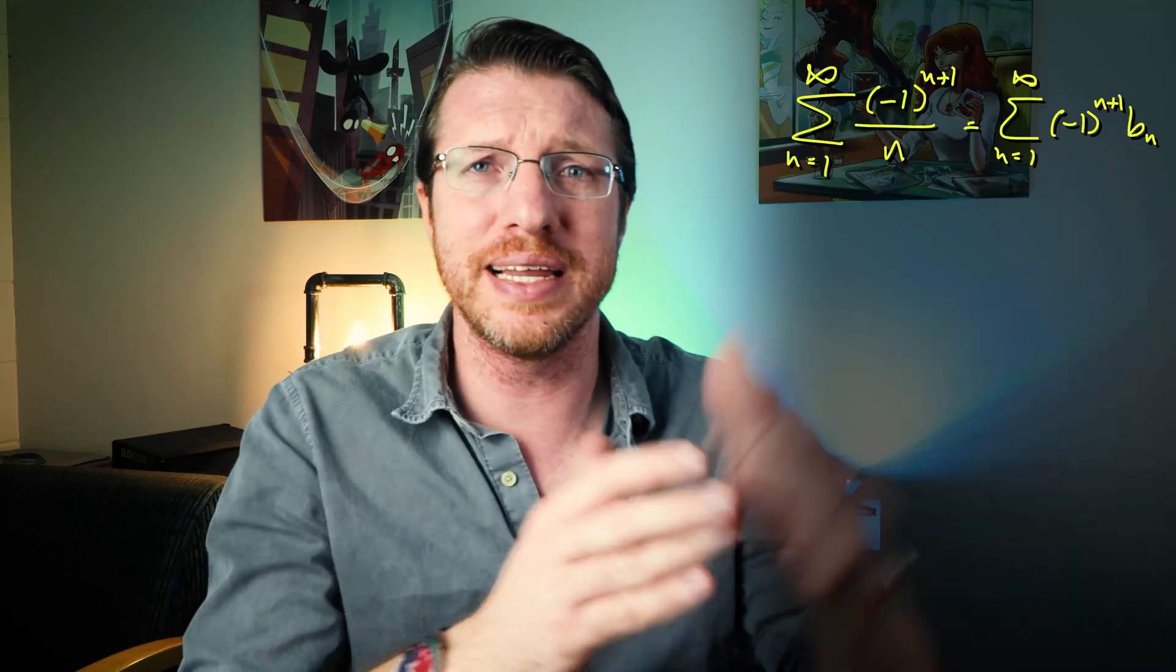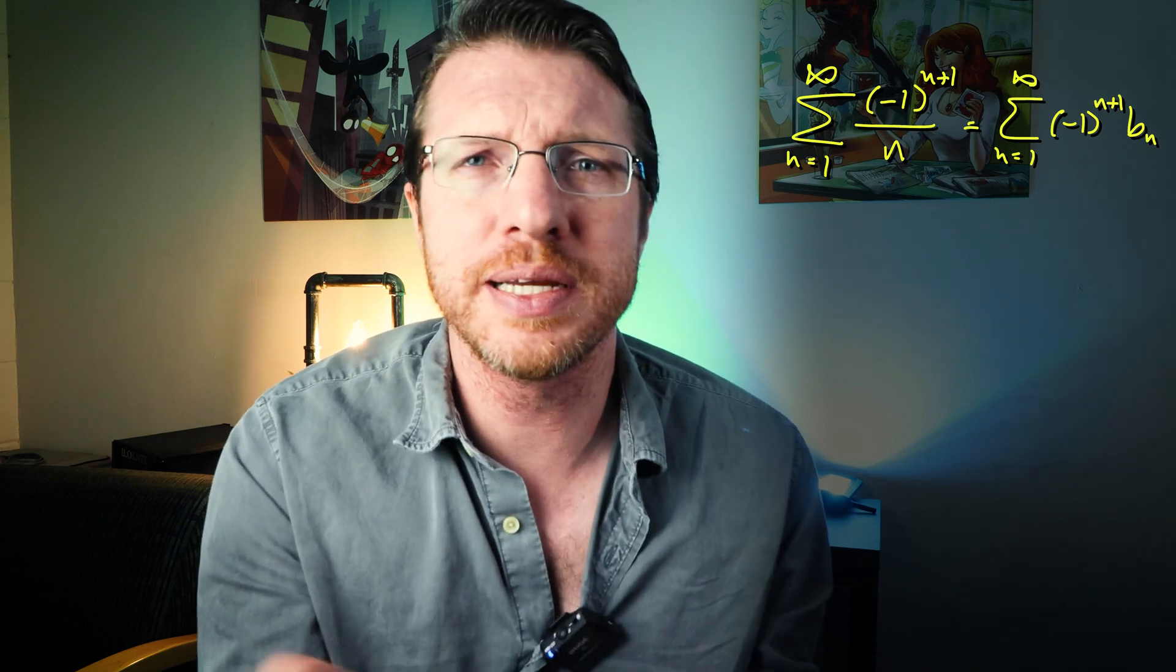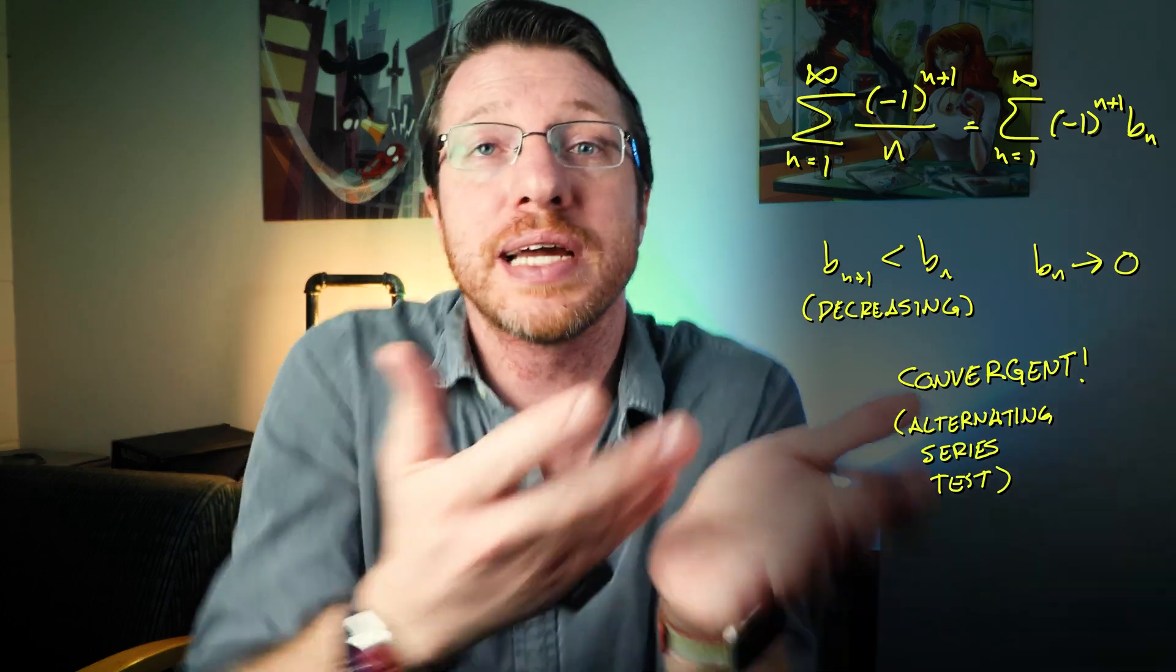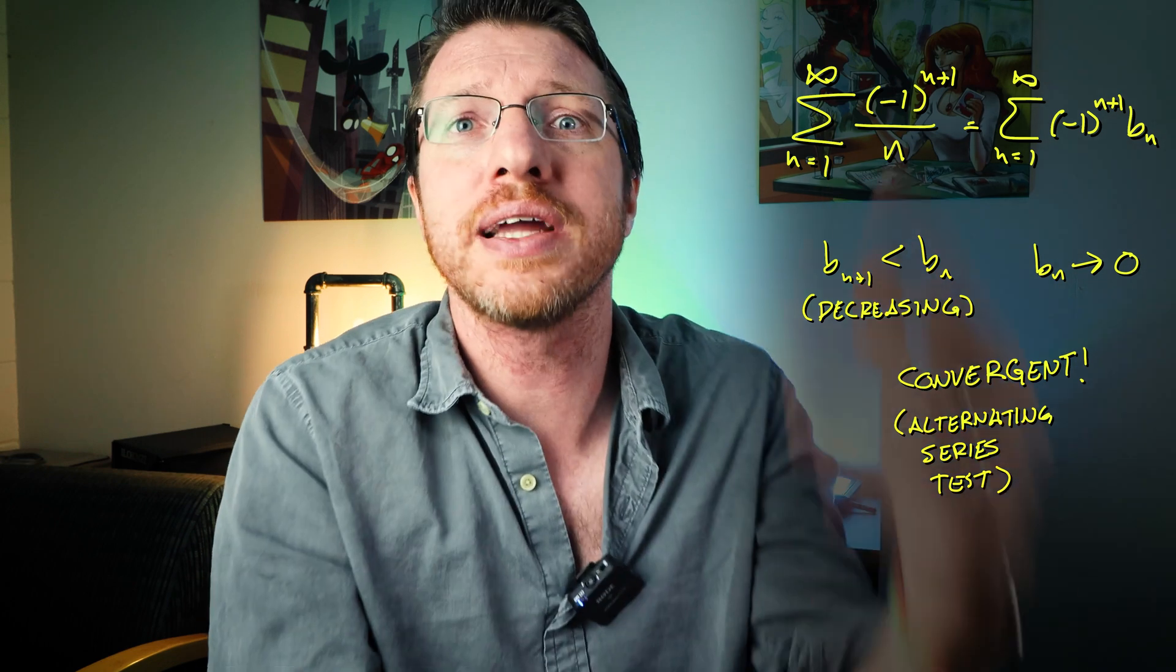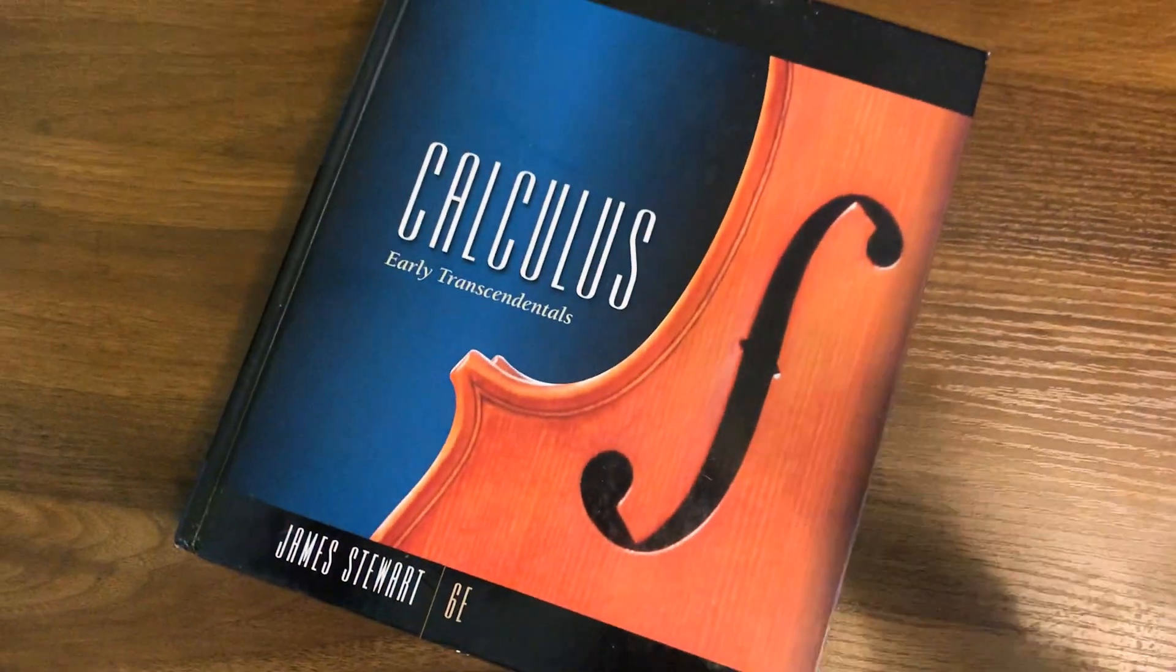So things seem so cut and dry in elementary calculus. You have a series, and you see it converges because it's an alternating series with decreasing terms that go to zero. Done. It's the alternating harmonic series. We show that converges, and we have solved math. That is a check mark in our calculus 2 class.